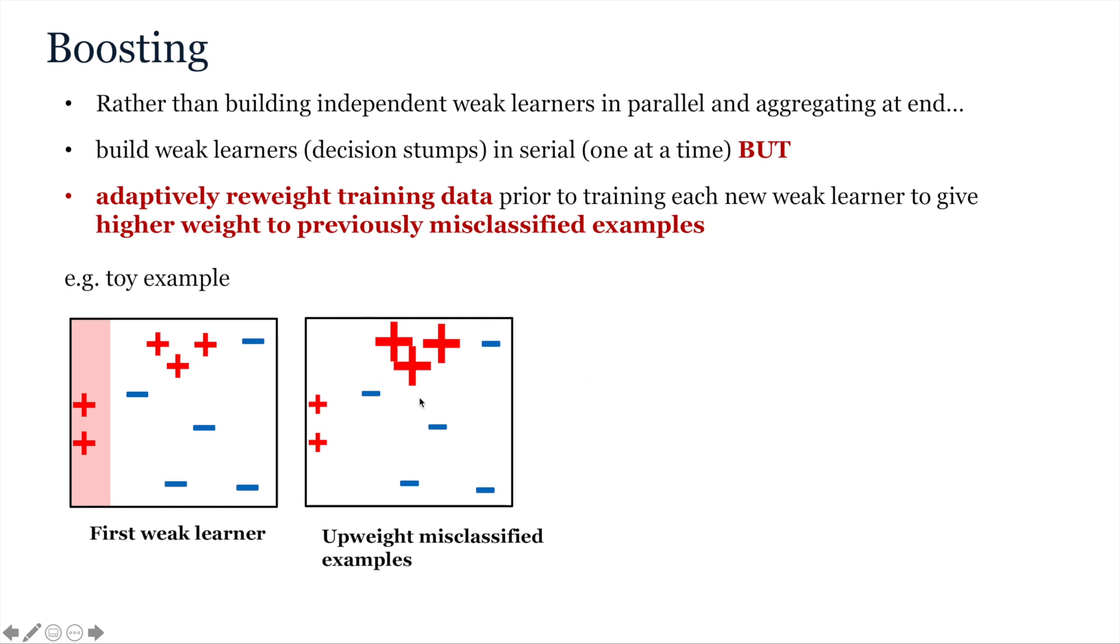So in this second stage, the base learner is told to work harder at getting these up-weighted samples correct. So we might imagine that it would next learn a threshold indicated by this red box. This time, however, we see it's made a mistake on these three blue minus signs.